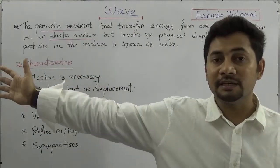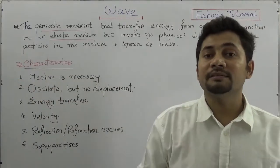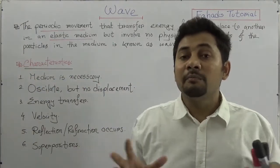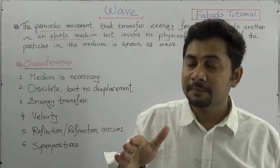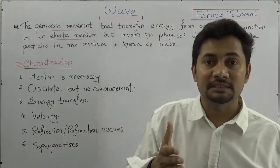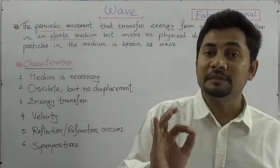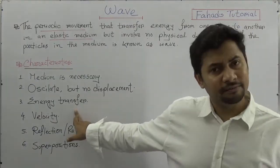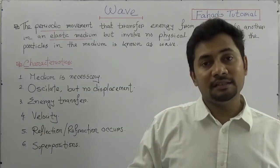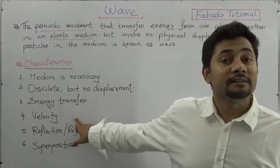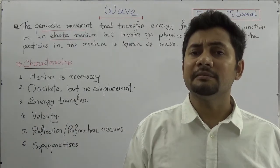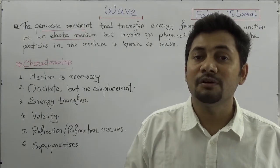For example, when wind is blowing in a paddy field, the paddy oscillates. Or when we throw a stone in a pond, the vibrations move towards the bank of the pond, but no water particles are displaced. The oscillations happen but there is no permanent displacement of the particles. Thirdly, from the definition we can say that energy transfer will happen — energy will be transferred through waves. This means waves must have a velocity.